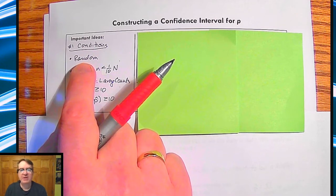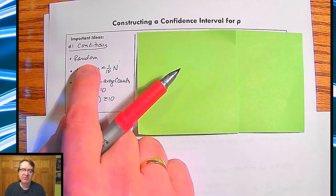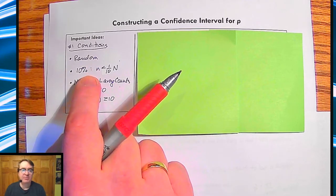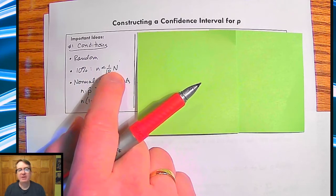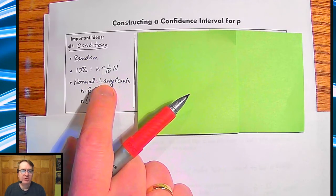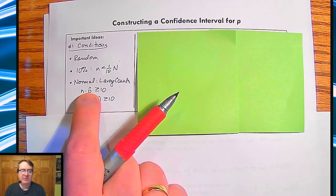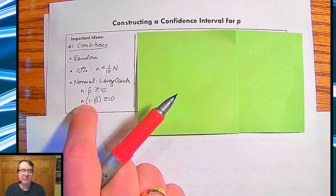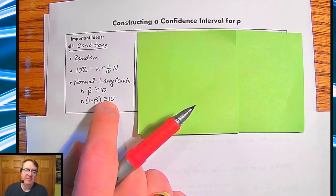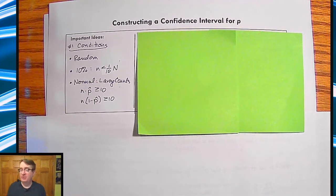You need to say that it's random. Oftentimes it's set within the context itself, so that's fine just to quote that. We need to hit the 10% rule, which means that our sample size can't be more than 10% of our population. And normal, we can just go through large counts and do this. Sample size times p hat has to be bigger than 10 and sample size times not p hat has to be bigger than 10. These are all things that we've done before. Sometimes they even will say that it's normally distributed in this case. Those are the things that should be in the back of your head when you see confidence interval for p.